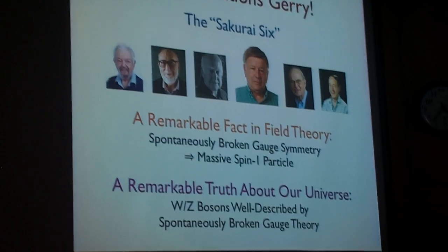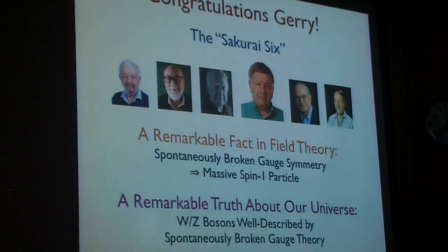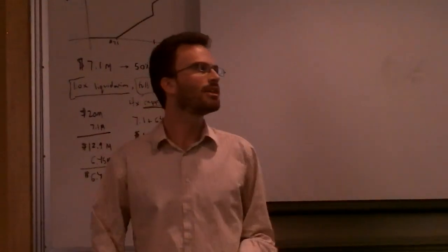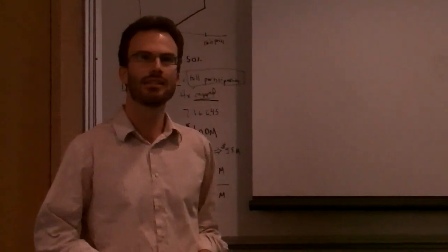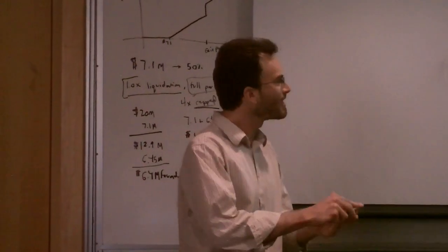And this did not have to be the case. We know of other cases in the standard model. For example, rho mesons are also massive spin-1 particles, but we don't describe them in terms of a spontaneously broken gauge theory. So the fact that this beautiful theoretical idea happens to be realized in nature—